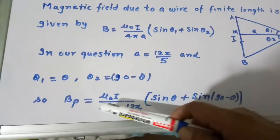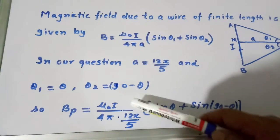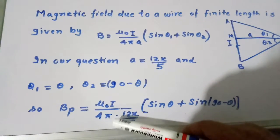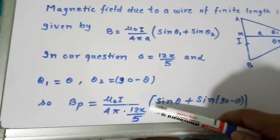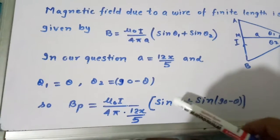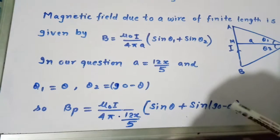So magnetic field at point P will be μ₀I divided by 4π, instead of A we have to write 12X divided by 5, within bracket sin θ plus sin(90 minus θ).